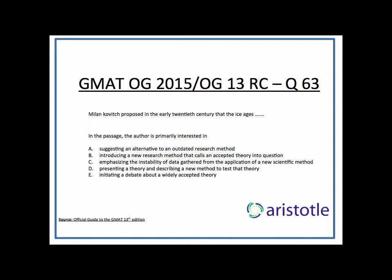The first question, which is number 63: in the passage, the author is primarily interested in doing what? This is a global/main purpose question. Looking at the first words of the answer choices: suggesting, introducing, emphasizing, presenting, initiating — I would eliminate suggesting and initiating since the author does neither. B says introducing a new research method that calls an accepted theory into question — nothing is being called into question, so B is out. C says emphasizing the instability of data — absolutely wrong. So D should be the answer: presenting a theory and describing a new method to test that theory. That's perfect. He presents Milankovitch's theory in the first paragraph and describes the isotope 16 and 18 method of testing that theory. A and E were eliminated just by looking at the first word, since it's a neutral passage.